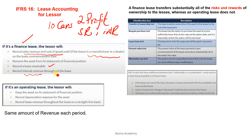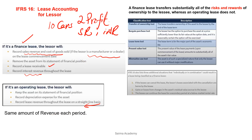Record interest revenue throughout the lease. But if it is an Operating Lease, we keep the asset on the statement of financial position — that asset will remain in your balance sheet. We record depreciation expense and record lease revenue throughout the lease on a straight-line basis, meaning the same amount of revenue is recorded in each period.